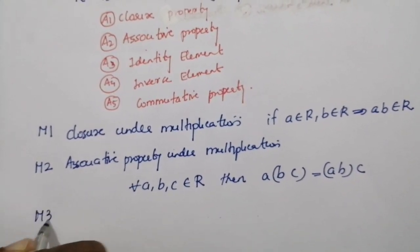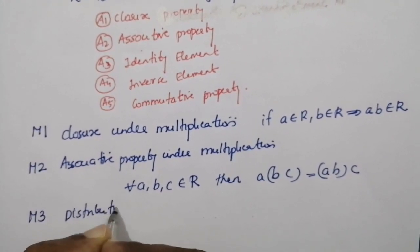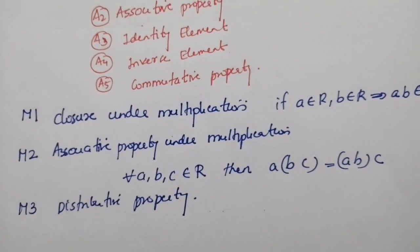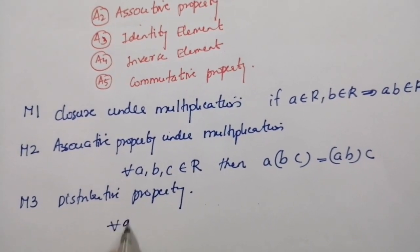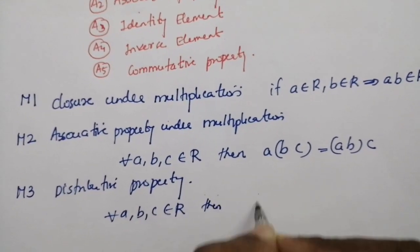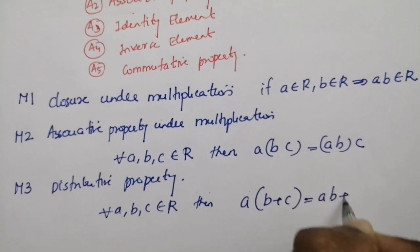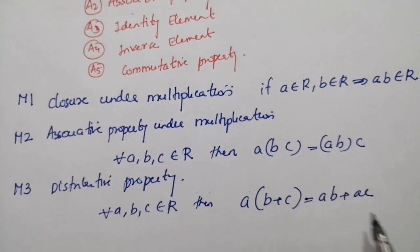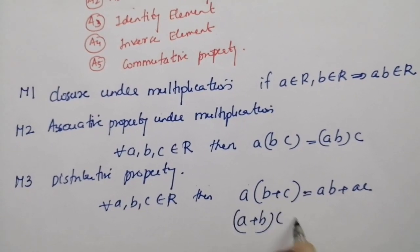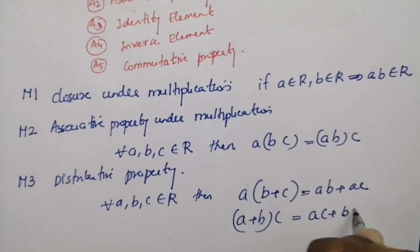The next axiom is M3, the distributive law. That is, for every a, b, c belonging to R: a(b + c) = ab + ac, and (a + b)c = ac + bc.